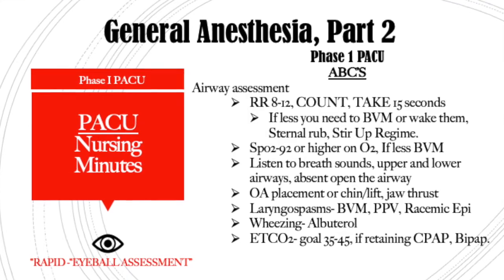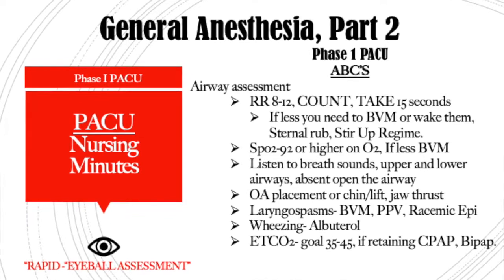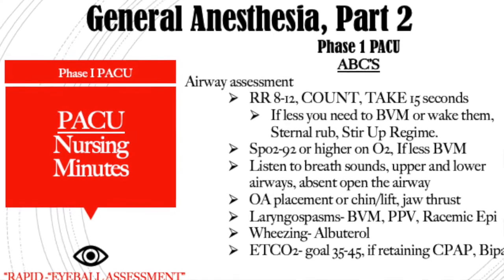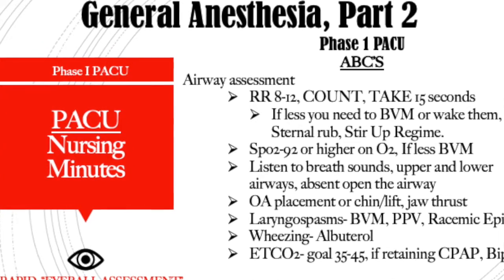Regarding laryngospasms — when a patient does wake up and goes into laryngospasm, you are going to do positive pressure ventilation with an ambu bag at 100% FIO2, and you are calling for help to get your anesthesiologist. If they are obstructed, you're going to have to do an emergent intubation with anesthesia. If they are unobstructed, you will need to do a stat racemic epinephrine nebulizer and probably some additional maneuvers to open up those vocal cords.